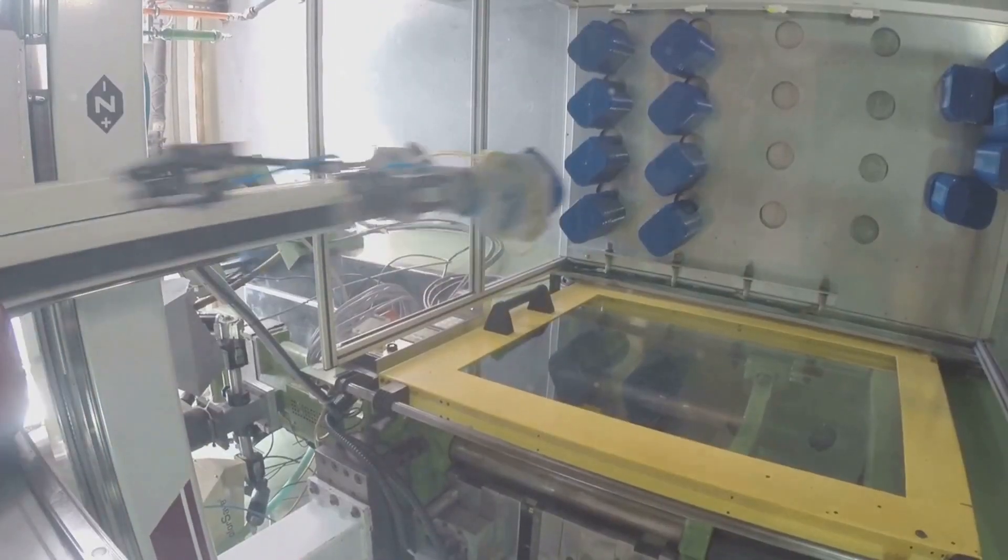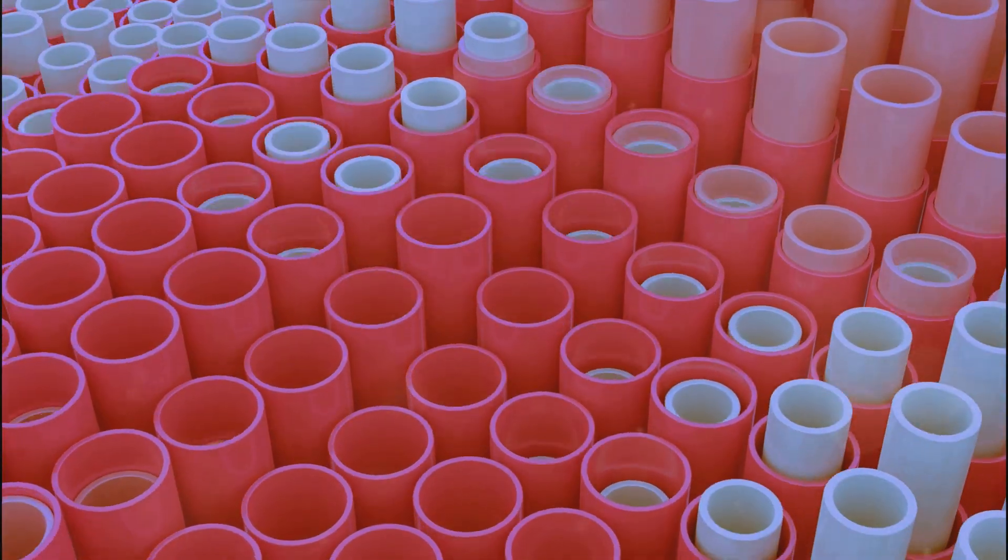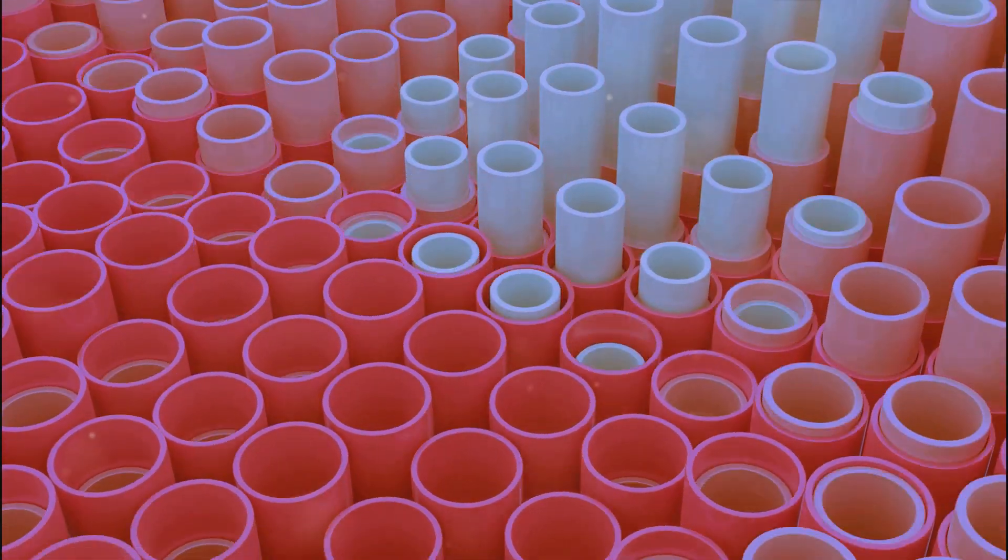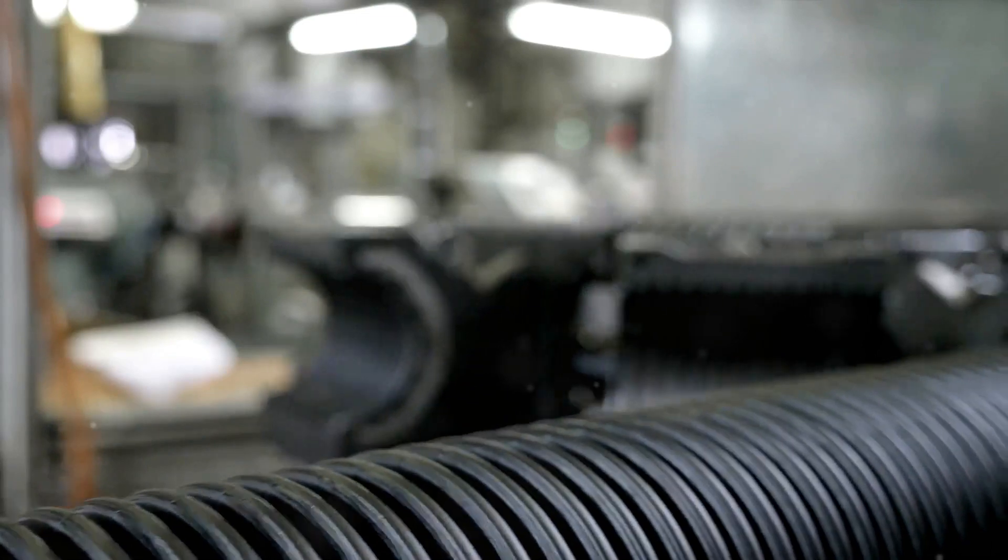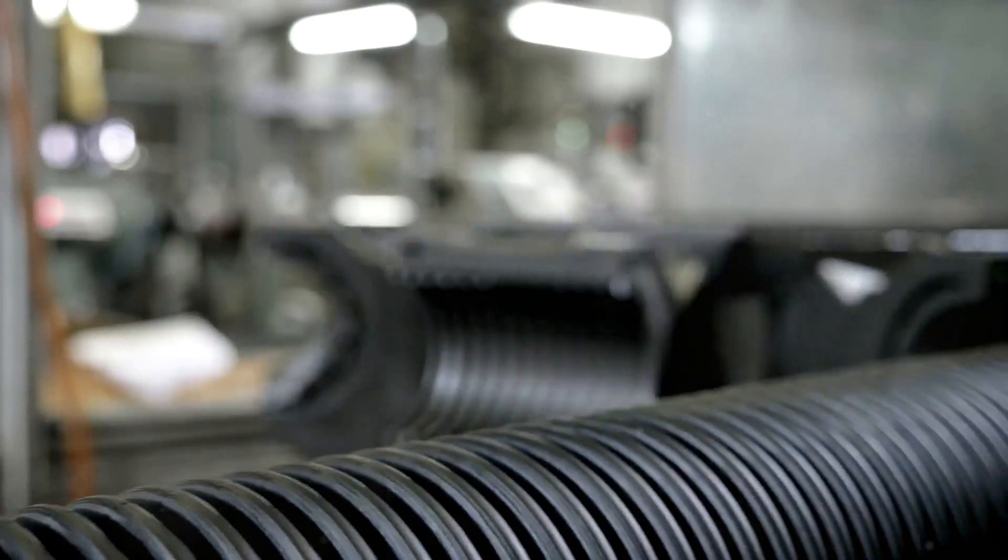Next, the phenyl oxalate ester solution is injected into a plastic tube, which forms the body of the glow stick. This tube is not just any tube, it is made from a special plastic that is both flexible and durable, able to withstand the chemical reaction that will occur within it.